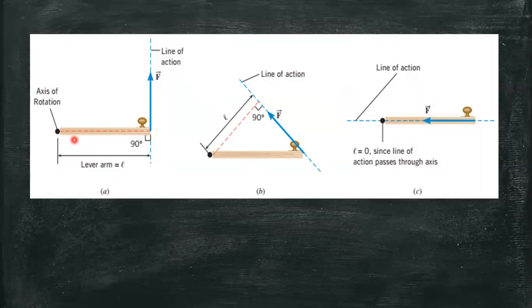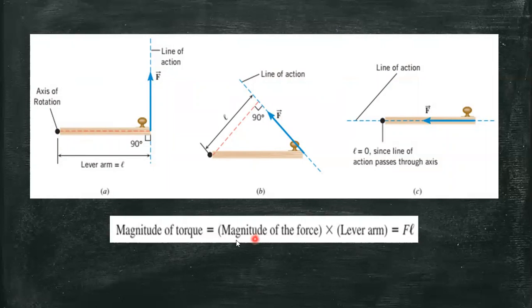Two concepts that are important in the definition of torque. The line of action is an extended line drawn collinear or along the force. The lever arm is a distance L between the line of action and the axis of rotation. By the way, the axis of rotation here is this hinge, which is perpendicular with the screen, measuring on a line that is perpendicular to both. These two components are very important in defining torque.